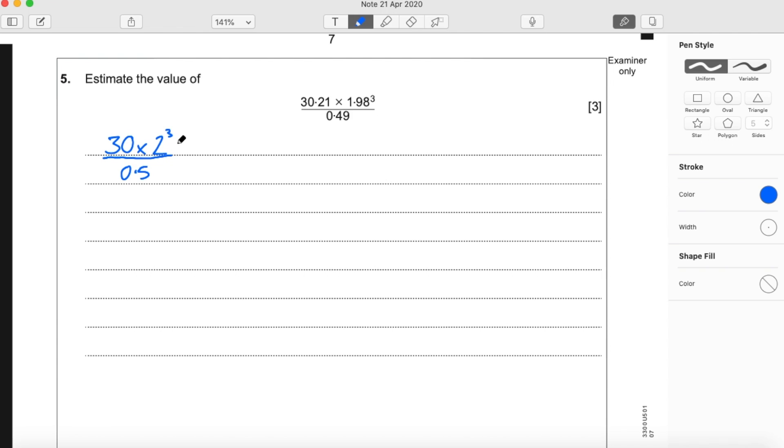30 times 2 cubed divided by 0.5. So we can simplify this. 30 times by 2 cubed is just 2 times 2 times 2. 2 times 2 is 4 times another 2 is 8.